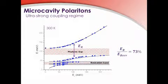The Rabi energy of the coupled system can be seen here. This gives us the strength of the light matter interaction. 73% is the highest coupling ever reported for a room temperature system.